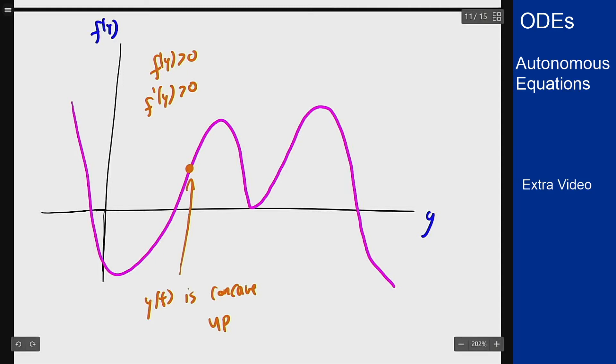If we look now say somewhere over here, we now have f of y positive because the graph is still above the axis, but f prime is now negative because the graph is decreasing or going downward. Therefore here the graph will be concave down.